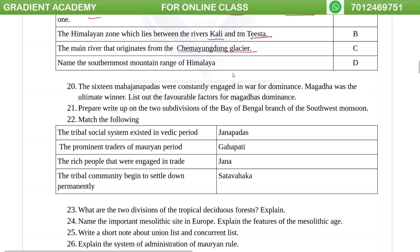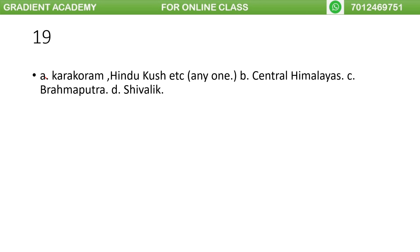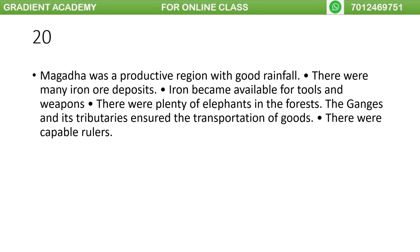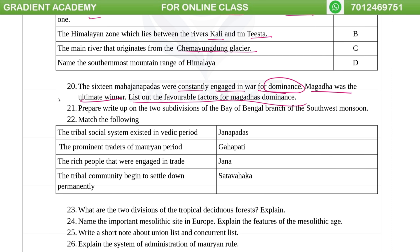The 16 Mahajanapadas were constantly engaged in war for dominance, and Magadha was the ultimate winner. List the favorable factors for Magadha's dominance — including iron resources, elephants, and control of transportation via rivers like the Ganga.